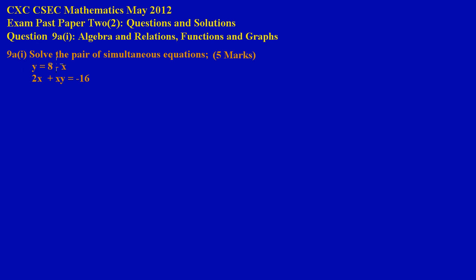In question 9a part 1, we're asked to solve a pair of simultaneous equations for five marks. Equation 1 is y = 8 - x. Equation 2 is 2x² + xy = -16.